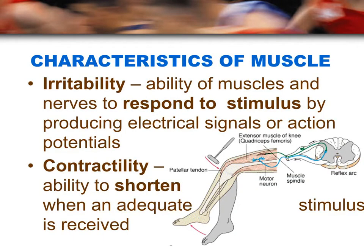There are two characteristics of muscle. First is irritability, which means there has to be some type of signal coming into the muscle that tells it to work. That signal usually comes in the form of an electrical stimulus from the nervous system — a muscle cannot work without a direct message from a nerve. Contractility is the actual shortening of the muscle. Contraction means the muscle is shortening, and because it is attached to bone, it pulls the bone, which causes movement.